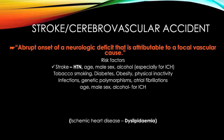The most important risk factor for stroke is hypertension, especially for hemorrhagic stroke. Other risk factors include age, male sex, alcohol, tobacco smoking, diabetes, obesity, physical inactivity, infections, genetic polymorphisms, and atrial fibrillation, where the atria don't contract properly and fibrillate, leading to circulation problems. Age, male sex, and alcohol are especially associated with hemorrhagic stroke, while the others are common to both stroke types.